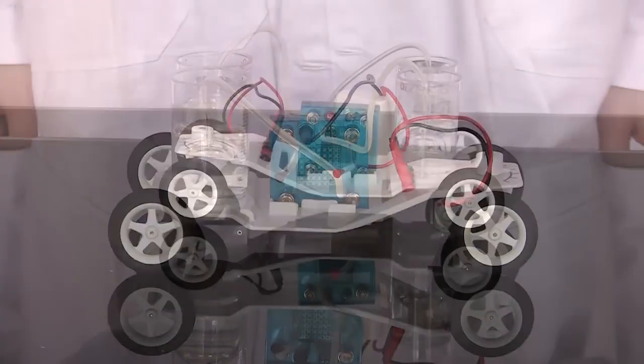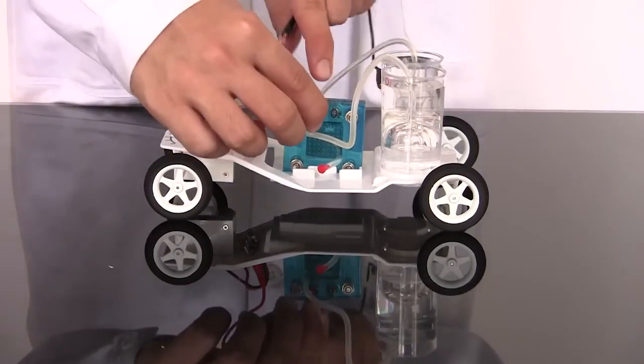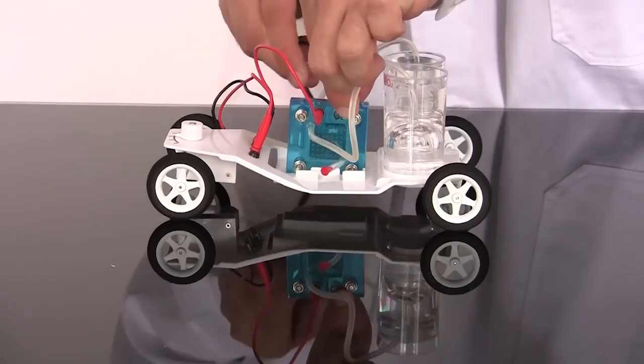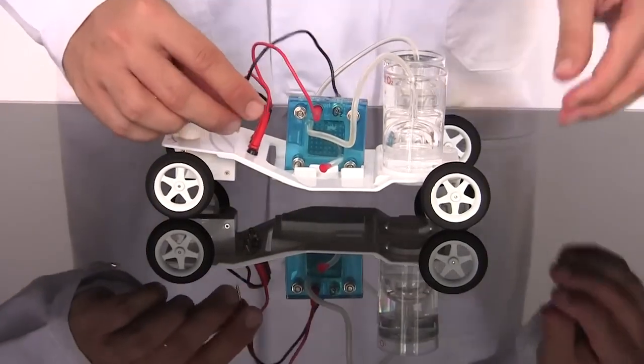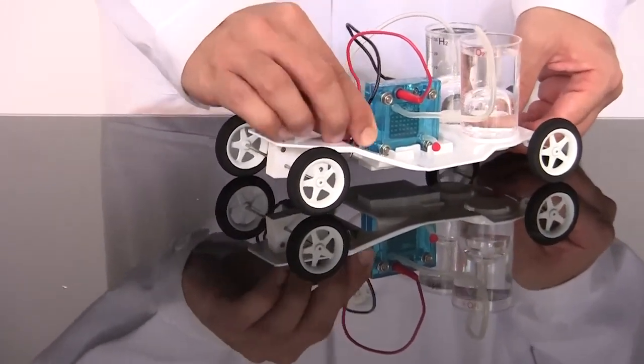When the cylinders are full, disconnect the battery pack and use the hydrogen to power the car. Students can modify their car to try to get it to be more efficient. Is there a minimum amount of water they need to put into the cylinders? Can they lighten the car in some way?